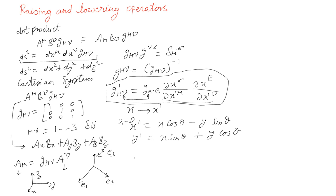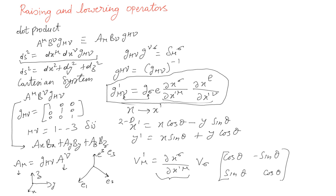For a vector, you write v'_mu = (∂x^rho/∂x'^mu) v_sigma. This is the covariant component transformation. The transformation matrix for a rotation looks like cosθ, −sinθ; sinθ, cosθ. All it does is change the axis system — it doesn't really change the vector itself, just the components, such that the vector is always pointing in the same direction.